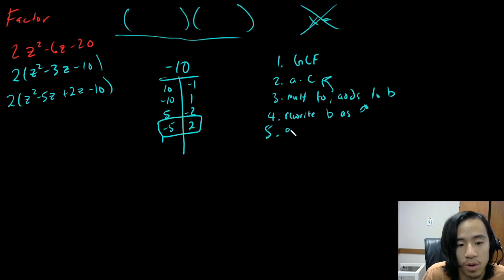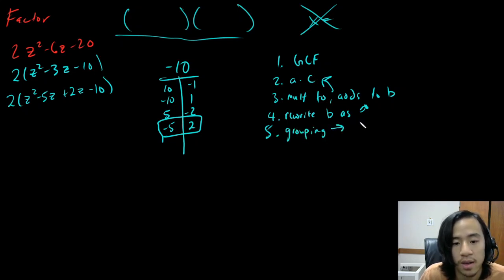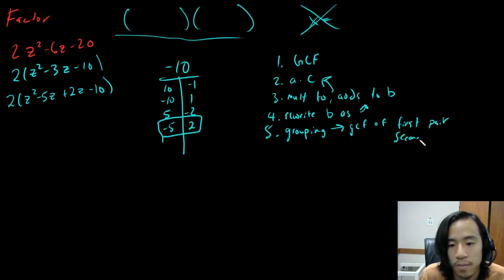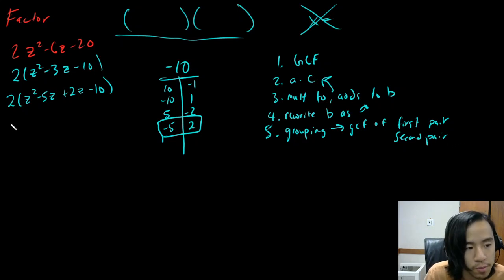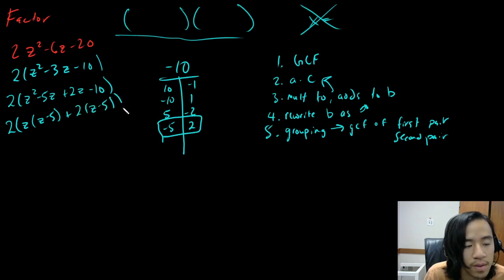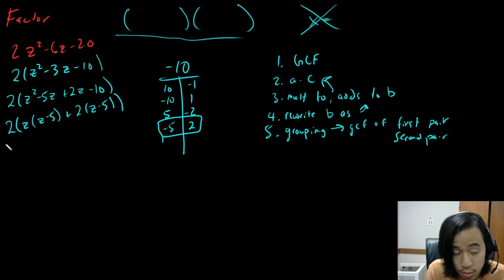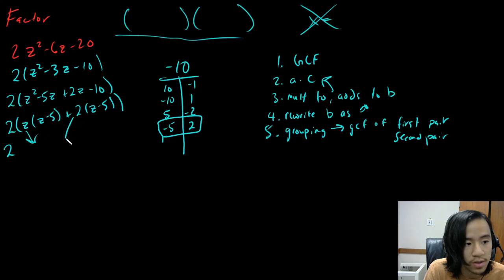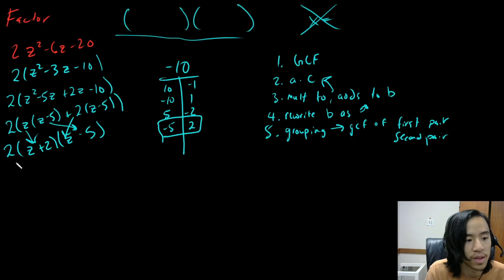Now the last step: we're going to do our grouping step. This means we GCF the first pair of terms and then the second pair. The first pair of terms have a Z in common, so I'm going to take out a Z: Z parentheses Z minus five. The second pair have a two in common: two parentheses Z minus five. Now, still part of the grouping step, we take Z and two and make that one term, Z plus two, and then the other term is Z minus five. So this is my answer.